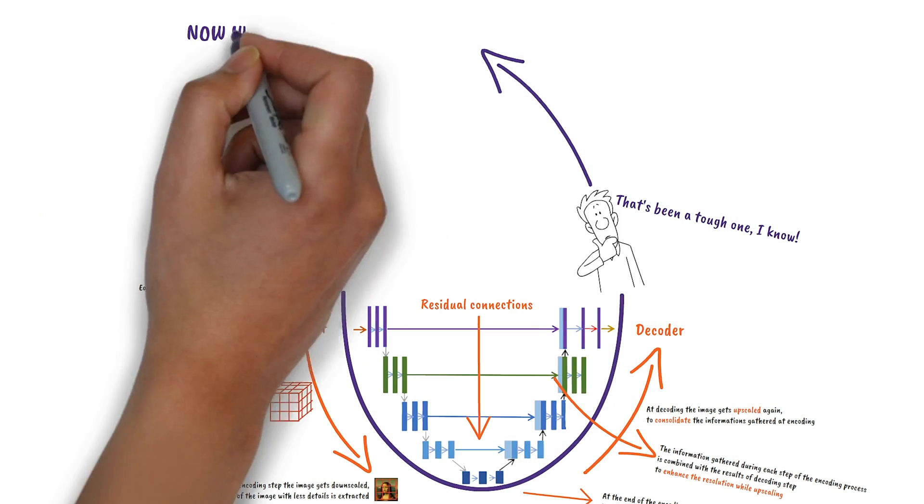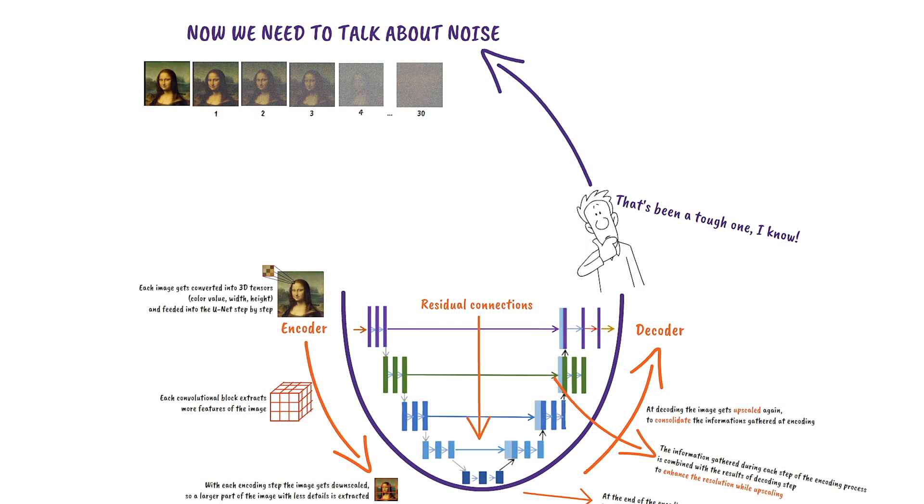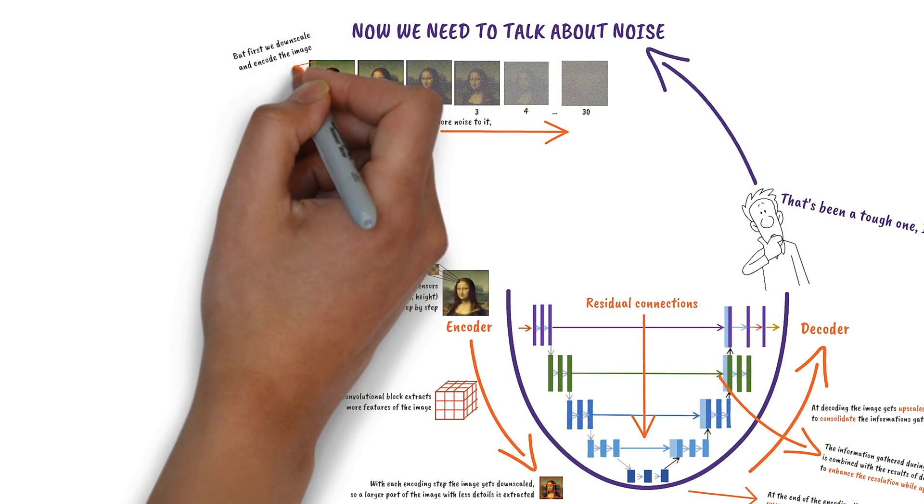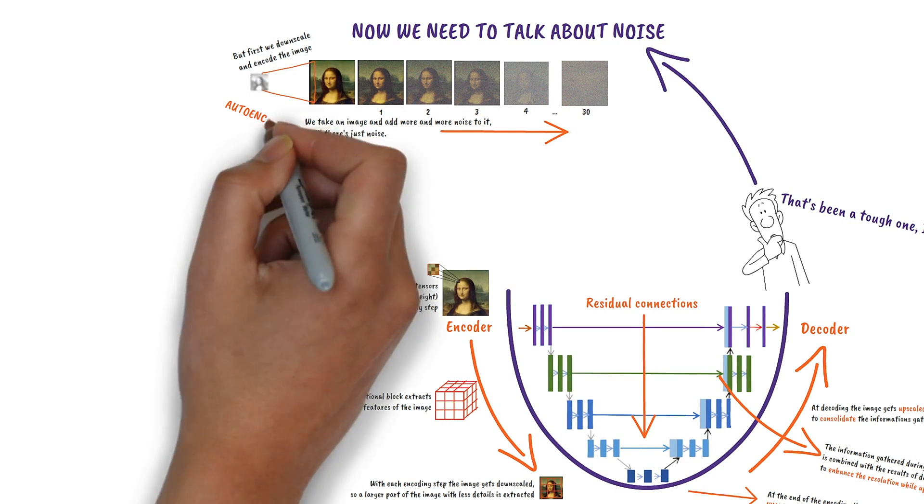Now let's talk about noise. In a step-by-step process, more and more noise is added to an input image until there's only noise left. To reduce the size, the image is downscaled before using an autoencoder.